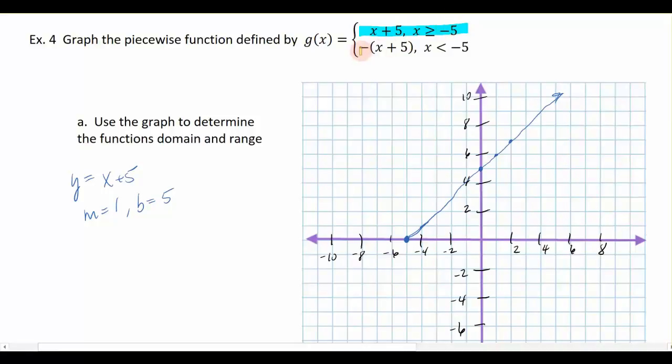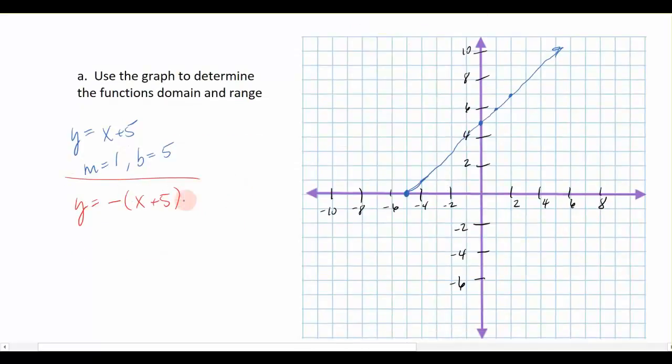Now let's look at the second portion of my piecewise function. This says negative of x plus 5 for values of x that are less than negative 5. So, if y is equal to a negative times x plus 5, I would probably take this and let's rewrite it as negative x minus 5 by distributing and getting rid of the parentheses.